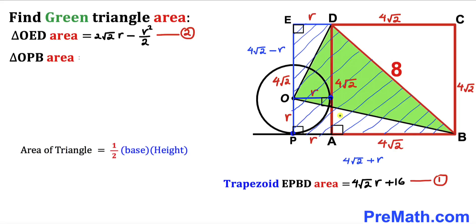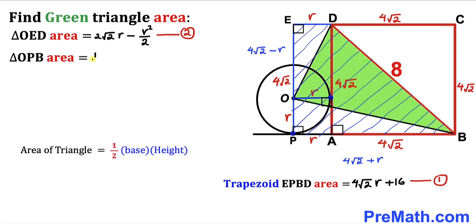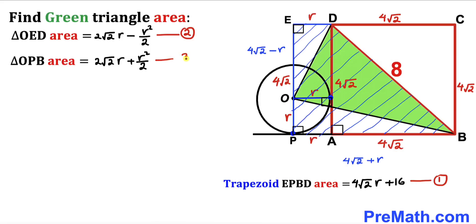Finally, let's calculate the area of triangle OPB. Using Area = ½ × base × height, our base is 4√2 + r and our height is r. So the area is ½ × r × (4√2 + r). Distributing and simplifying, we get 2√2·r + r²/2. That is Equation 3.